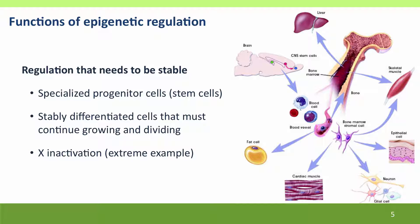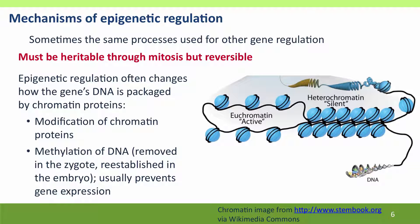An extreme example of epigenetic regulation is X inactivation, where a whole chromosome is stably turned off and it must — through all of the cell divisions, through the whole life of the organism — stay off. Mechanisms of epigenetic regulation can sometimes be the same processes used for other kinds of gene regulation, but more commonly they're modifications that change how the DNA is packaged into compact structures called chromatin.